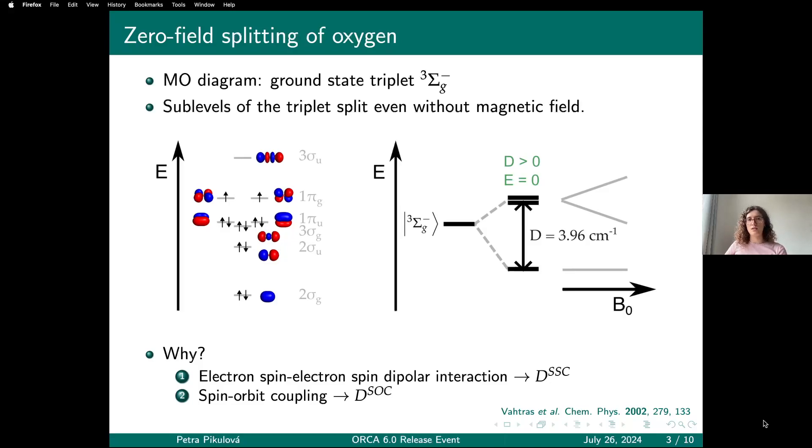Now what are the interactions that make this splitting happen? Well, one of them is the dipolar coupling of the electron spin-electron spin, and that gives rise to this spin-spin coupling contribution to zero-field splitting. Another interaction is the spin-orbit coupling.